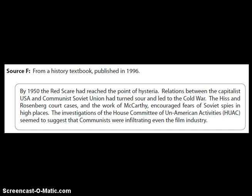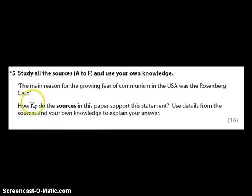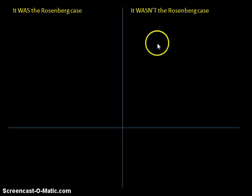Just like with question four, the first thing I would do is create a very quick grid. On one side, I would be looking for evidence in the sources that it was the Rosenbergs case that caused this growing fear of communism, and in the other column I would be recording evidence that it wasn't. I would advise that you pause the video and go through the sources yourself to create your own table before watching me do it. I'm going to type straight onto this page, so it would be helpful if you had the sources in front of you.